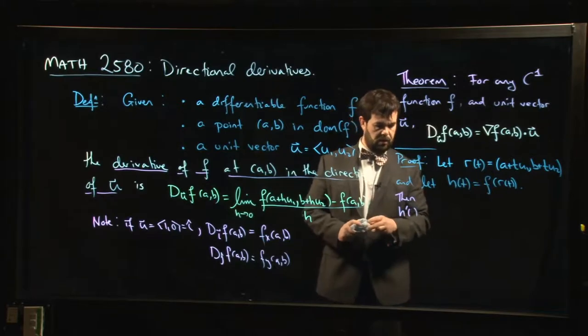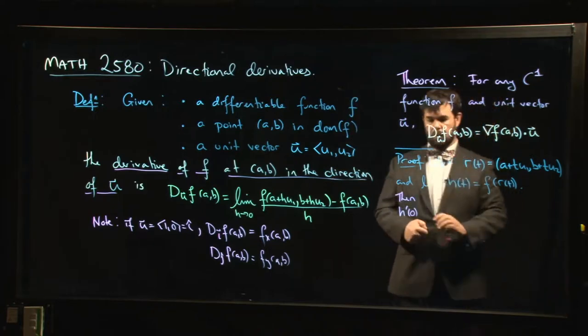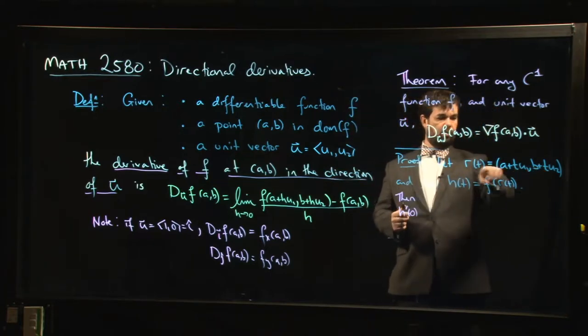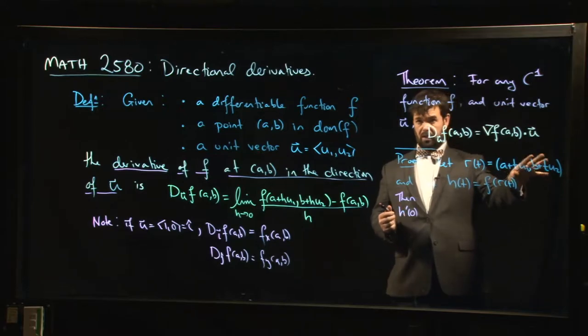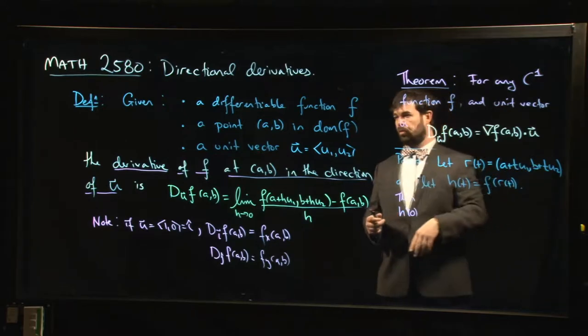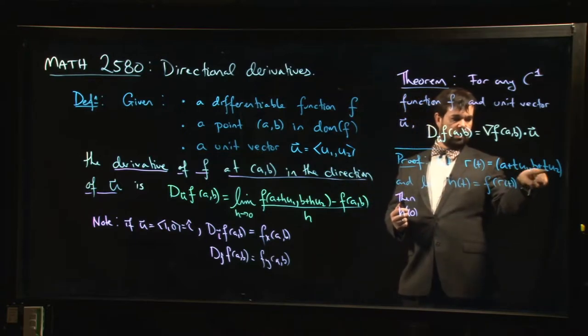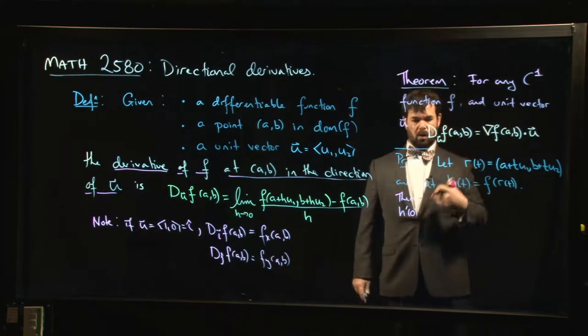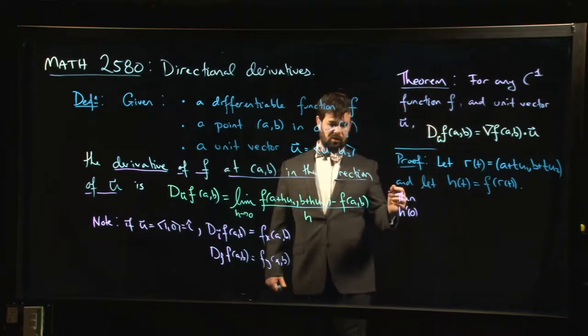Now what I'm going to do is calculate h' in two different ways. Realize h is just a real-valued function of one variable, so if I wanted to calculate the derivative of this, this is a usual calc one derivative and we know what the limit definition is for the derivative in one variable. On the one hand, h'(0) - why at zero? Well, notice where you are. So by the way, this is a parametric curve, but it's a parameterization of a straight line. It's a straight line that goes through the point (a, b), and it happens to reach that point exactly when t equals zero.